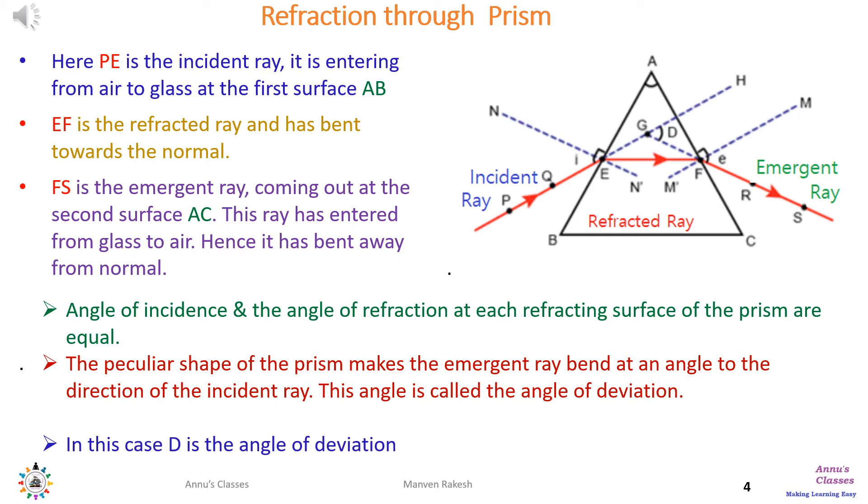Triangle ABC represents the prism. Here AB is one lateral surface and AC is the other lateral surface through which the emergent ray comes out. P is the incident ray which is entering into the prism through the first surface AB.